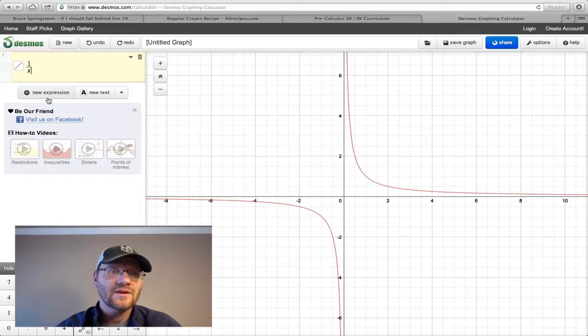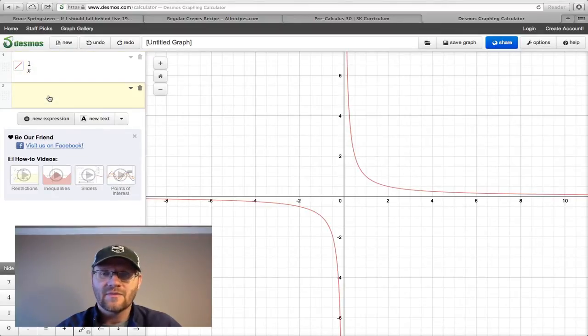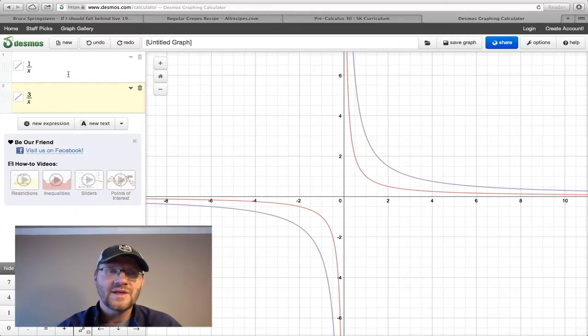So when we start applying different transformations to this thing, let's see what happens. So if I did, say, 3 divided by x, so I change that a value. Now, it still looks the same way. So this is a vertical stretch. It looks the same way, except at this point here is now further away from the origin, I guess you could say. So the general shape of it is still the same. There's still a horizontal and vertical asymptote at x and y equals 0, but it just changes it that way.